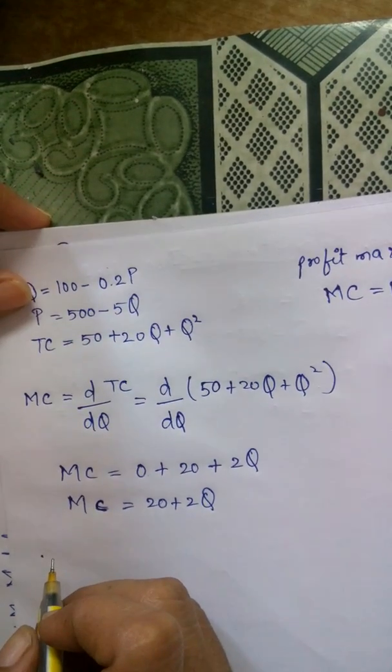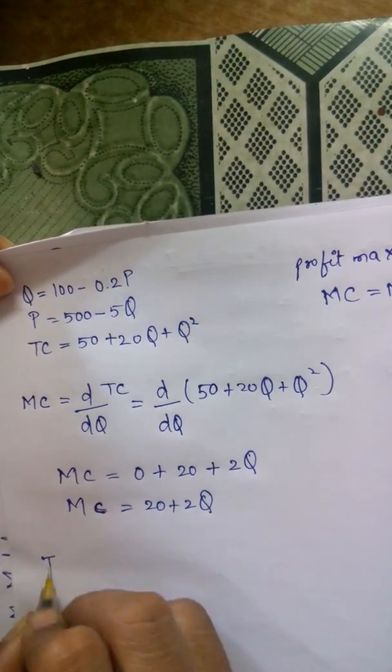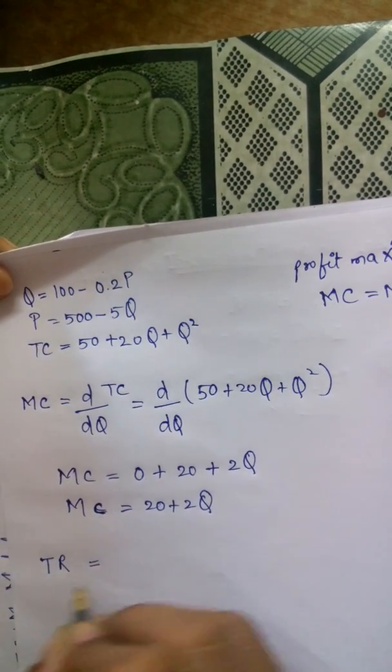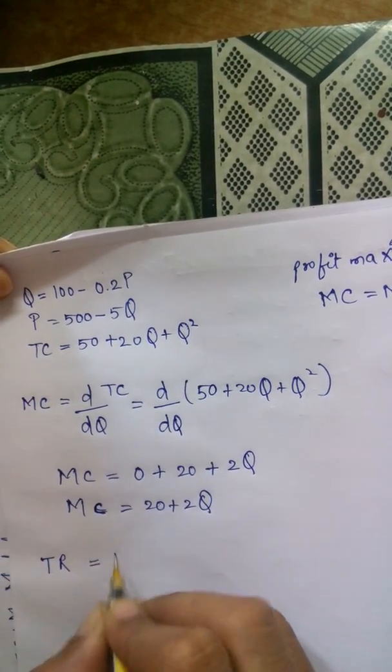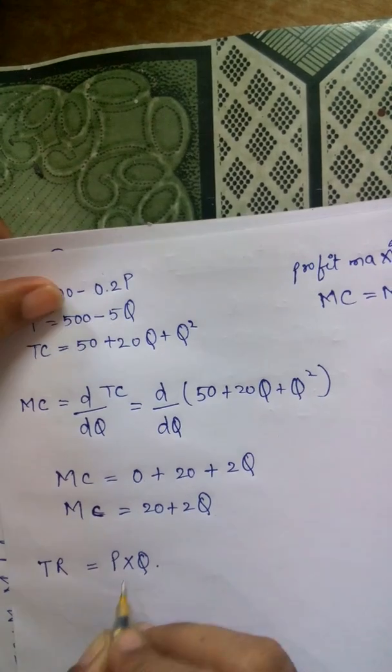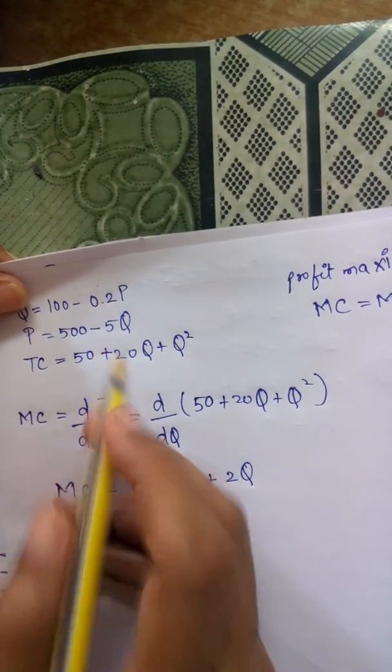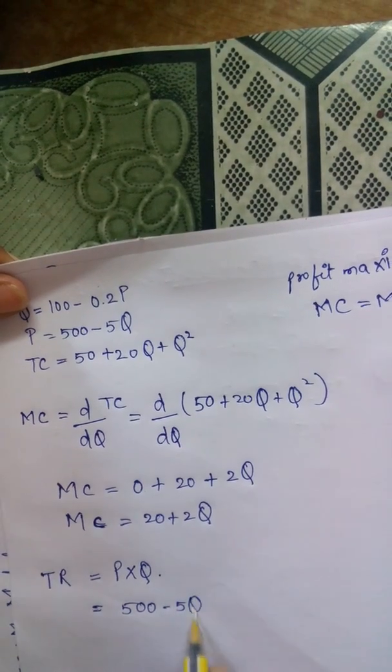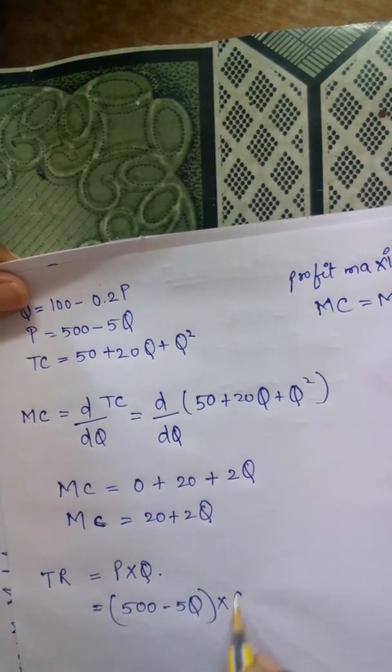For MR, we should know first what is TR. TR is total revenue. Total revenue is always equal to price into quantity. So P is already given as 500 minus 5Q, so 500 minus 5Q will be multiplied with Q.